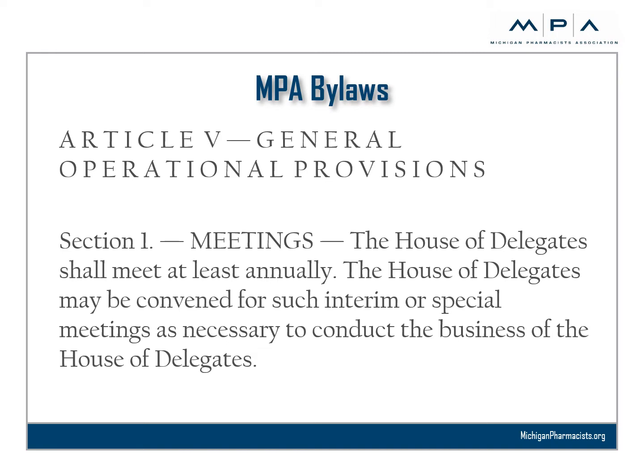In addition to the House session, the House, later in the year, also votes to approve the slate of candidates for the ballot used in MPA annual elections. Such business may be conducted through voting either in an electronic or a U.S. mail format.